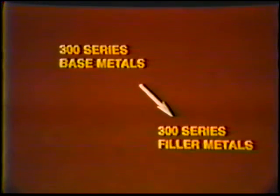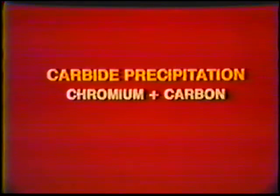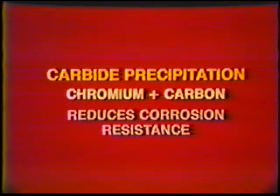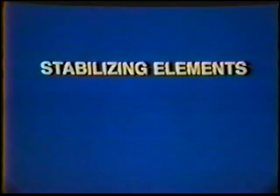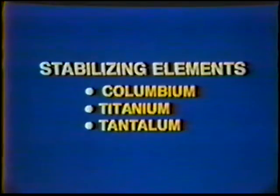Two groups of filler metals are specifically designed to reduce the effects of carbide precipitation. Carbide precipitation occurs when carbon combines with chromium, leaving areas in the metal which lack corrosion resistance. The first group are those with an L suffix after the composition number, such as ER-316-L. The L indicates a low carbon composition of about three hundredths percent maximum, which reduces the chance of carbide precipitation. The second group contains stabilizing elements — columbium, titanium, and tantalum — which tend to tie up the carbon in the metal.